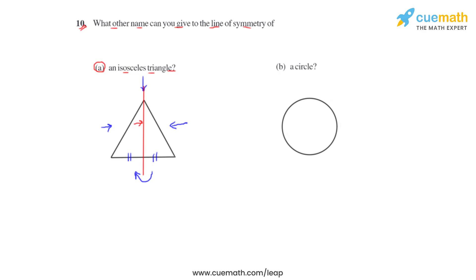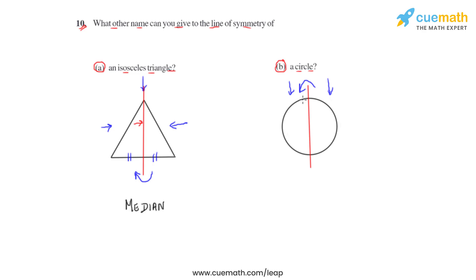So we can say that for an isosceles triangle, the line of symmetry acts as a median. Moving on to the second figure, which is figure B — a circle. We know that a circle has multiple lines of symmetry. Considering one of them, this line divides the circle into two equal halves such that if the circle is folded along this line, both equal halves will coincide.